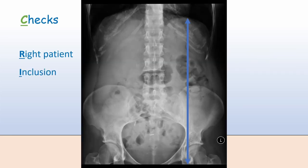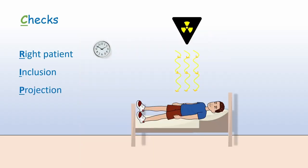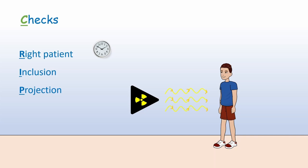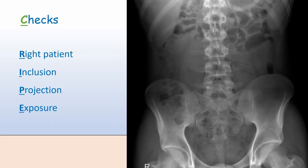P, for Projection, refers to the position of the patient relative to the x-ray source. Abdominal x-rays are usually anterior-posterior (AP) with the patient supine, meaning lying on their back. Occasionally they are taken AP with the patient standing, if the patient can't lie flat or if you want to visualise free air in the abdomen more clearly. E is for Exposure - the volume of x-rays that have passed through the patient. Too much exposure produces an image that's too dark, whereas an underexposed image will be too light.